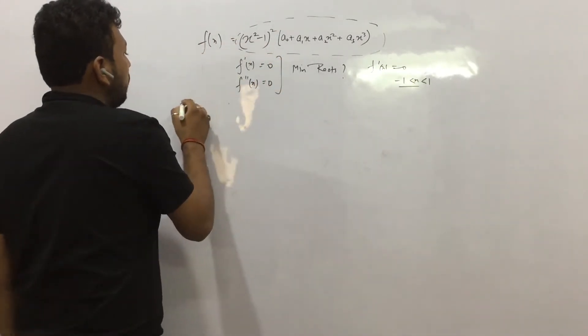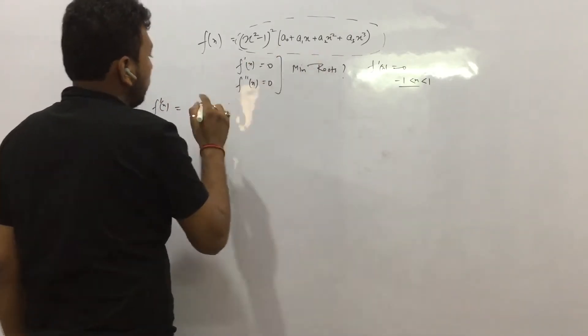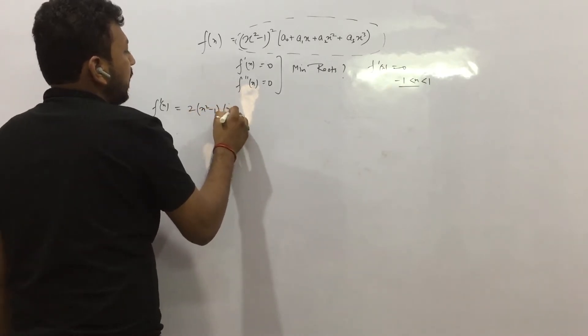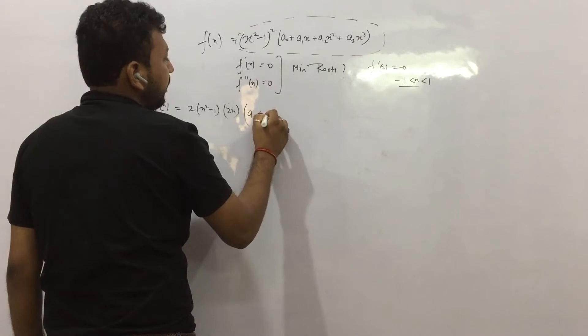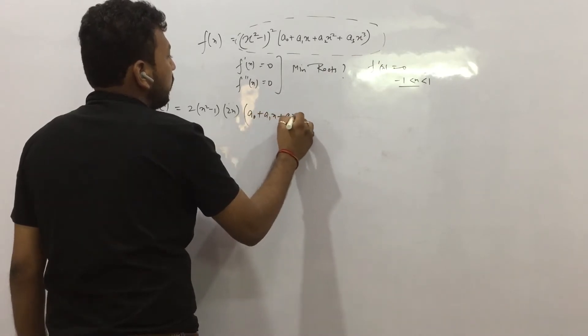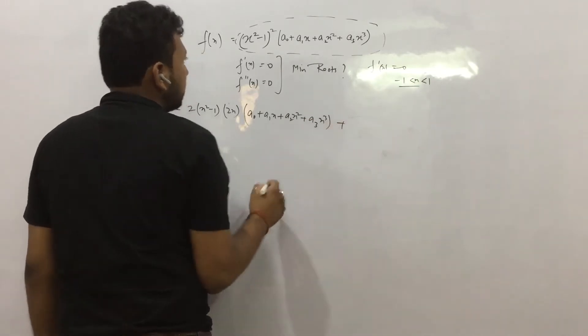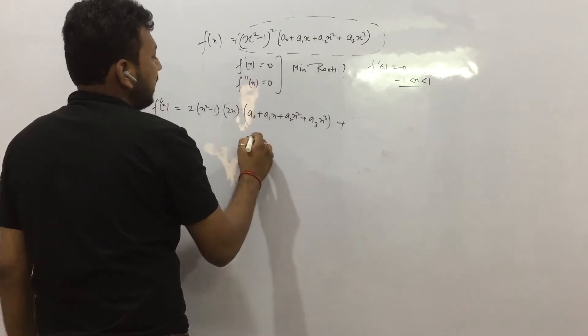Second thing. So let us calculate f'(x). So f'(x), you can go by the product rule. So it will be 2(x² - 1) into 2x, and the expression remains the same. I hope you know the product rule. Plus, the expression remains the same again.